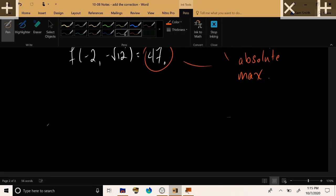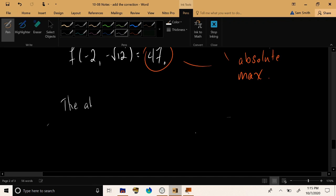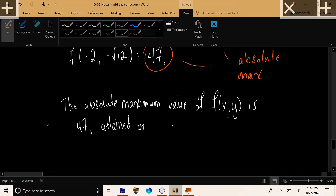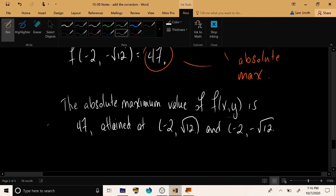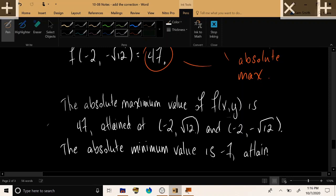All right. Now, if you're interested, here is how I would write my final answer to this question in the most concrete and clear terms that I can think of. I would say the following. The absolute maximum value of this function, f of x, y, is 47. Attained, this value is attained at two locations, negative 2 root 12, and negative 2, negative root 12. And I would say the absolute minimum value is negative 7, and that was attained at the point 1, 0.